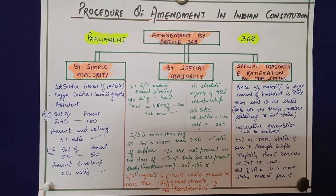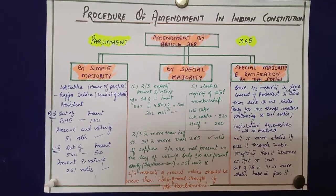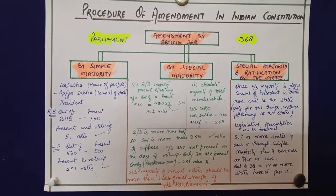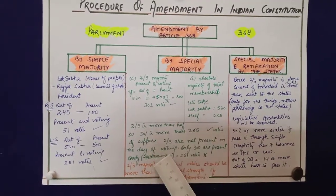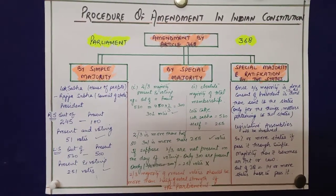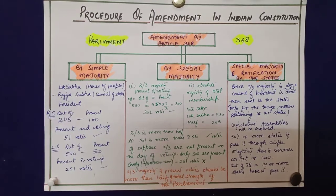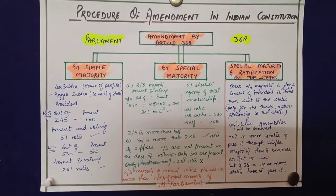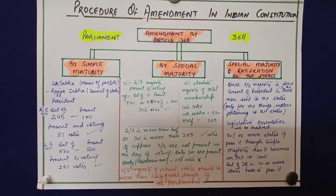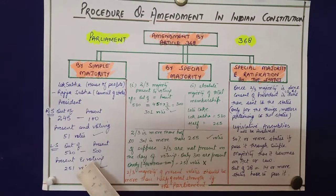And again, as I taught you earlier, our constitution is both rigid and flexible. Rigid, because it cannot be changed easily — this method is a bit difficult, it is not that easy that it can be changed off and on. But it is flexible also, because it can be changed as per the needs and aspirations of the people for the future of the country, by different methods, like simple majority.